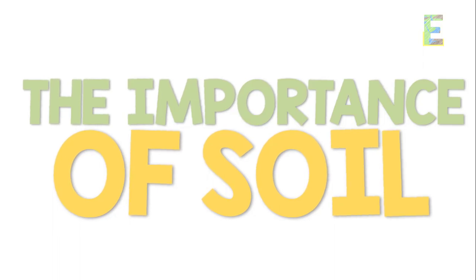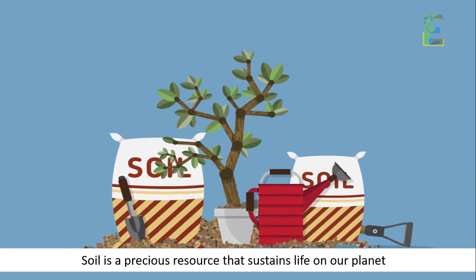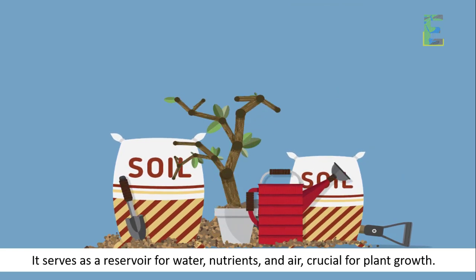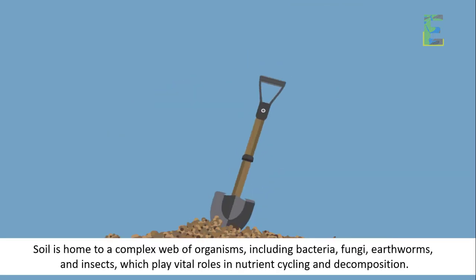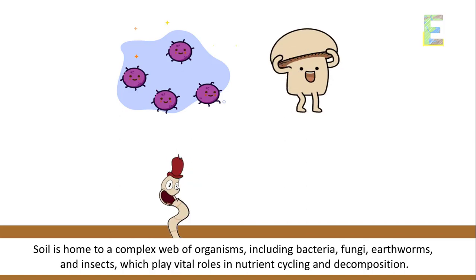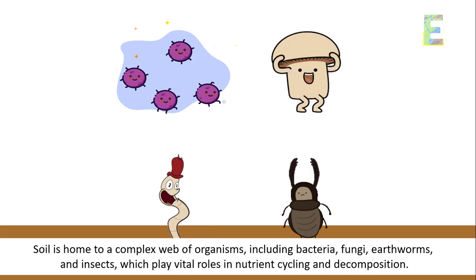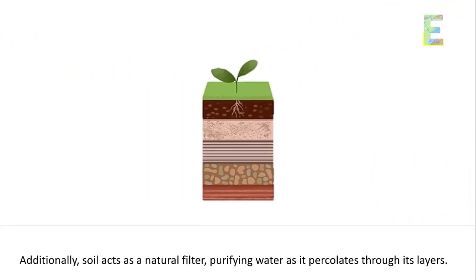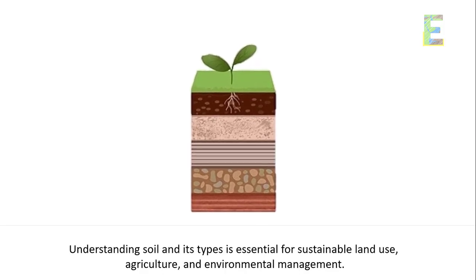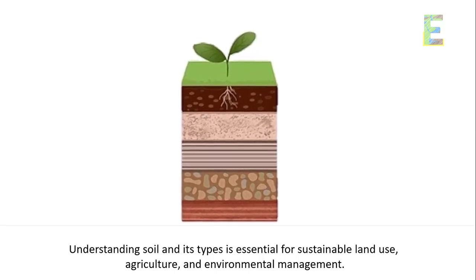The Importance of Soil. Soil is a precious resource that sustains life on our planet. It serves as a reservoir for water, nutrients, and air, crucial for plant growth. Soil is home to a complex web of organisms, including bacteria, fungi, earthworms, and insects, which play vital roles in nutrient cycling and decomposition. Additionally, soil acts as a natural filter, purifying water as it percolates through its layers. Understanding soil and its types is essential for sustainable land use, agriculture, and environmental management.